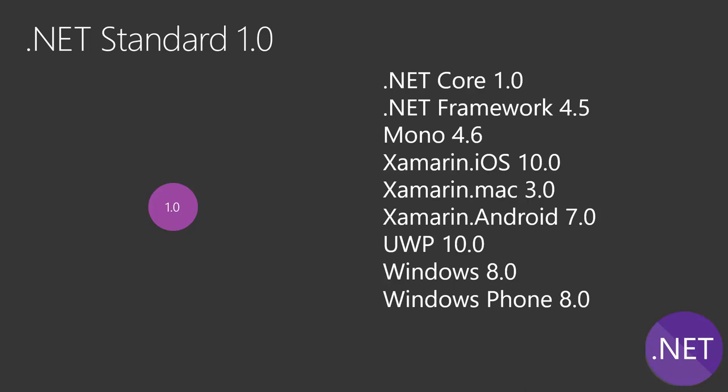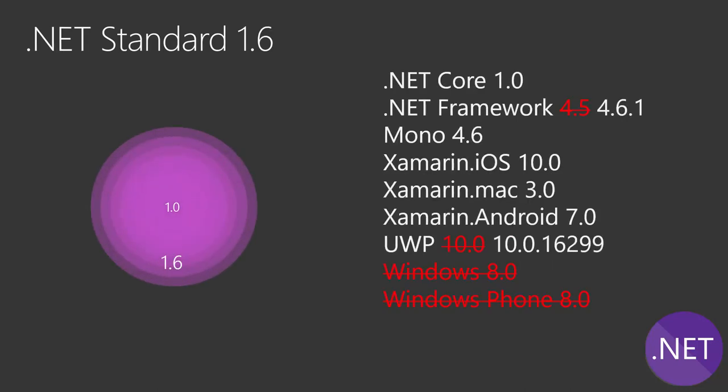Of course, you have only a few APIs at your disposal, so at some point you hit a wall and maybe you have to upgrade. Maybe you have to say, okay, my class library — I can't go with 1.0, it's too small. Let's go with 1.6, for example, so you have more APIs, but then suddenly you see some frameworks don't support that anymore.